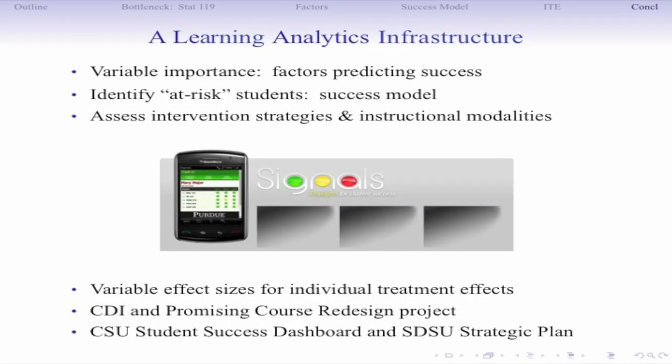To summarize: the ideas I've tried to get across are identifying important factors that predict success for students in your course, early identification of at-risk students, and a tool for assessing intervention strategies. There are also promising developments in course redesign grants and a new CSU student success dashboard, which I'm hoping will develop something similar.